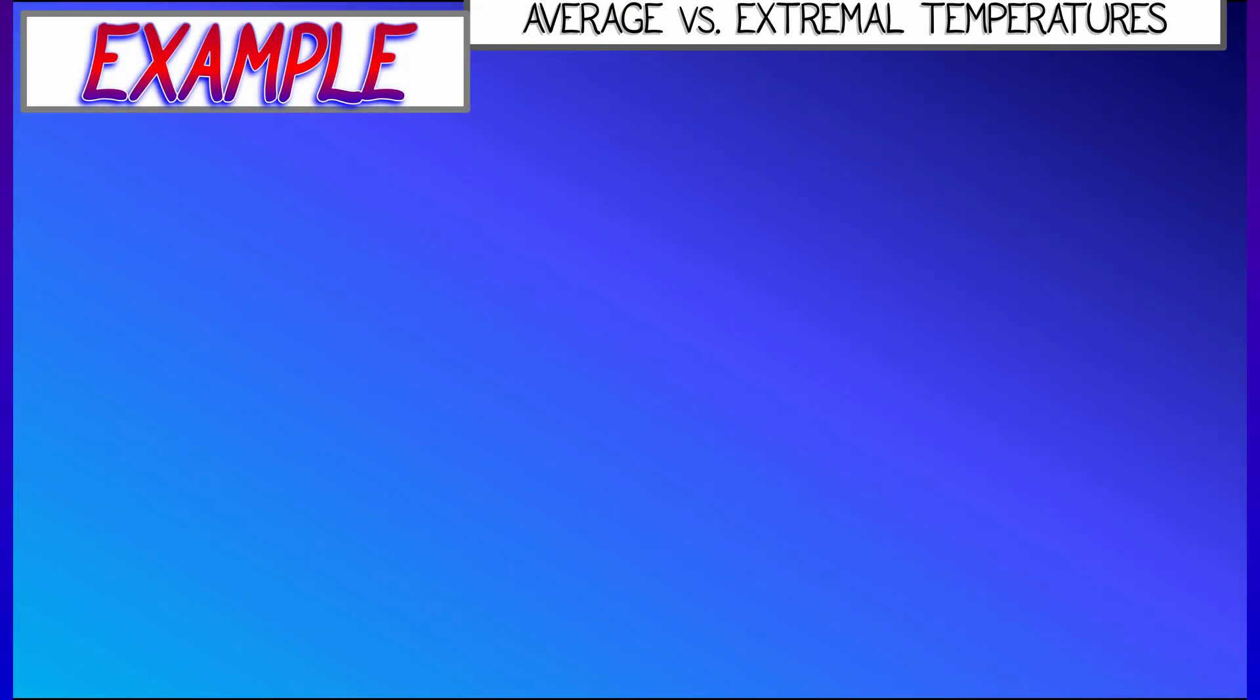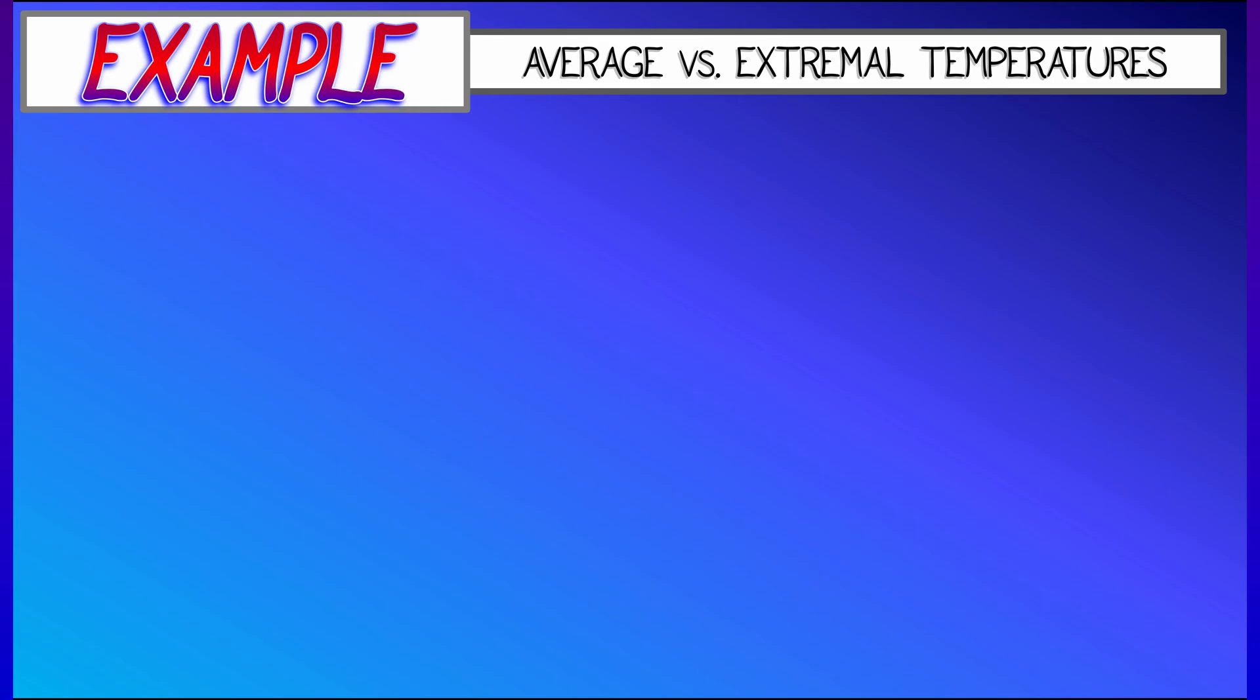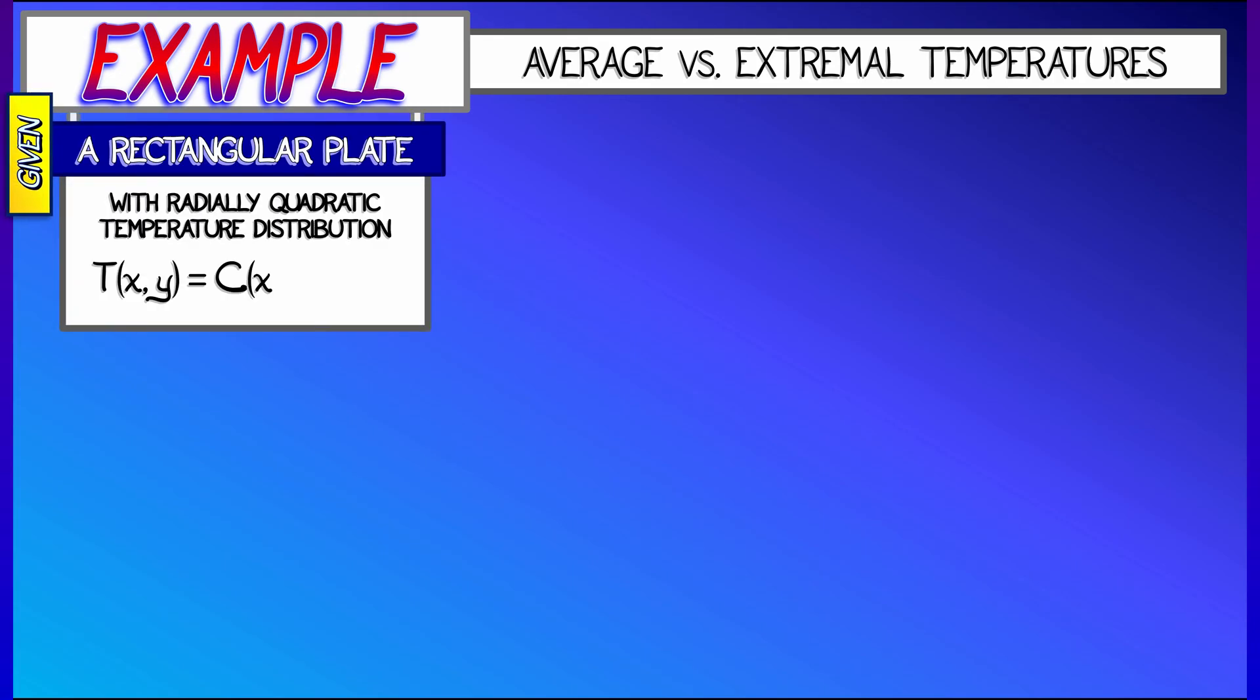Okay, let's do an example where we compute an average, in this case, an average temperature over a rectangular plate. Let's say that we've got this plate, and the position on the plate is given by coordinates x and y. The temperature is given as the following function, constant C times quantity x squared plus y squared plus some other constant A.